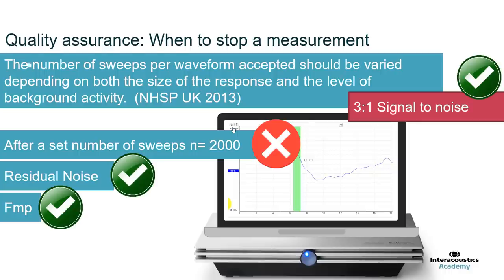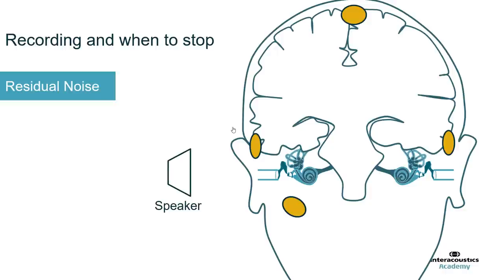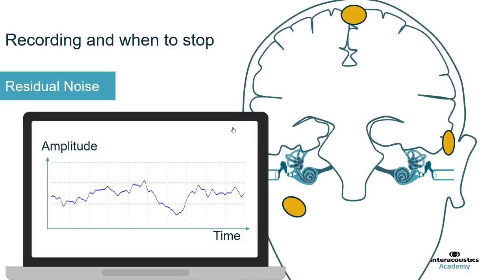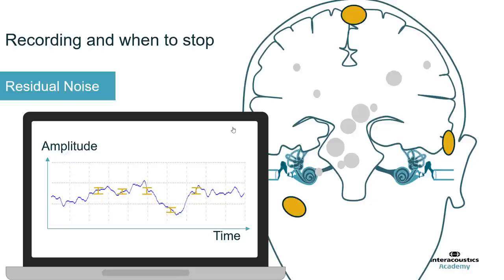The Eclipse has some really nice technologies to help: residual noise and FMP. Rather than using traditional methods like running 2000 sweeps, we should rely on more accurate estimations such as the residual noise algorithm, FMP, or the UK NHSP signal-to-noise technique. The residual noise calculator measures the variance across five points on the waveform. At the beginning of the test, variance is very high due to high residual noise. As testing continues and noise reduces, variance reduces. When variance is at a low level, we can estimate there is a small amount of noise in the recording and stop testing. In infants, we use a value of 25 nanovolts.